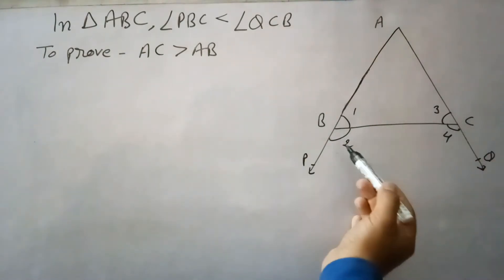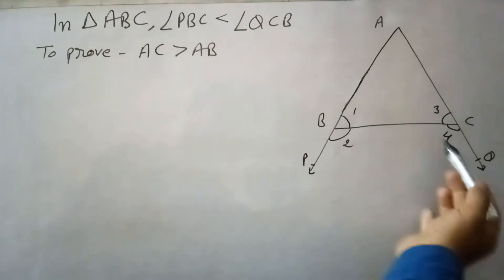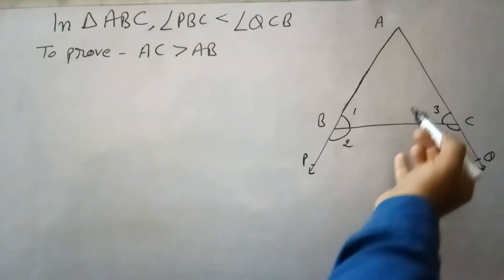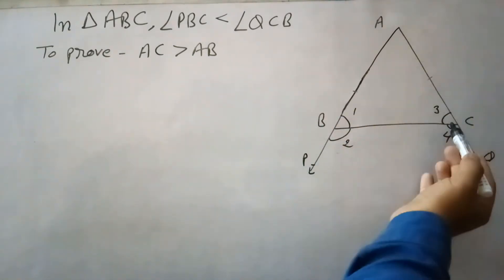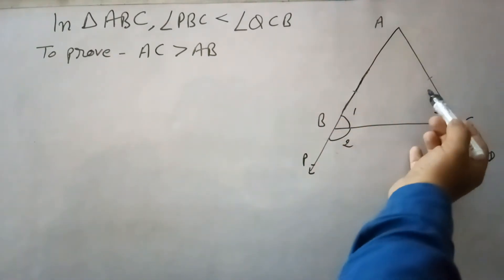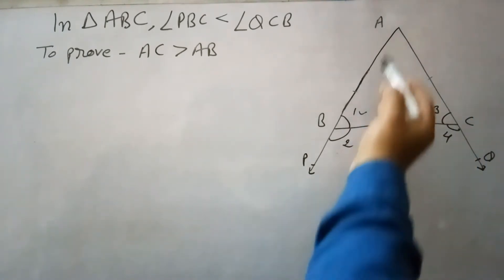Angle PBC (angle 2) is less than angle QCB (angle 4), and we need to prove that AC is greater than AB. The angle opposite to AC is angle 1, and the angle opposite to AB is angle 3.